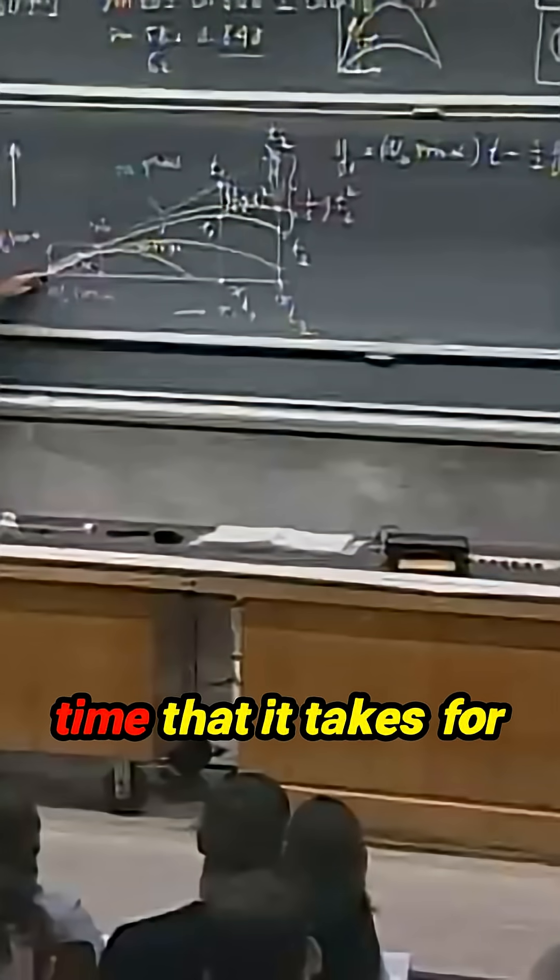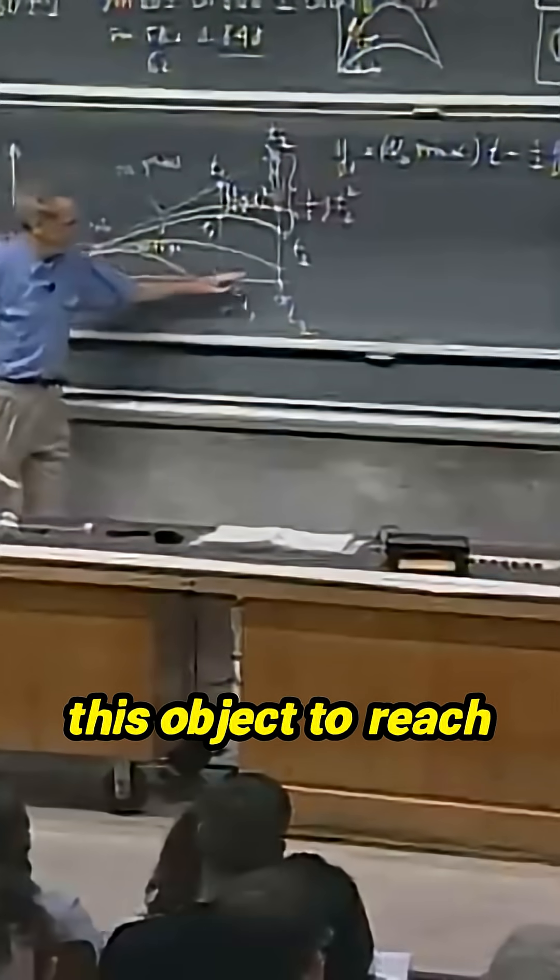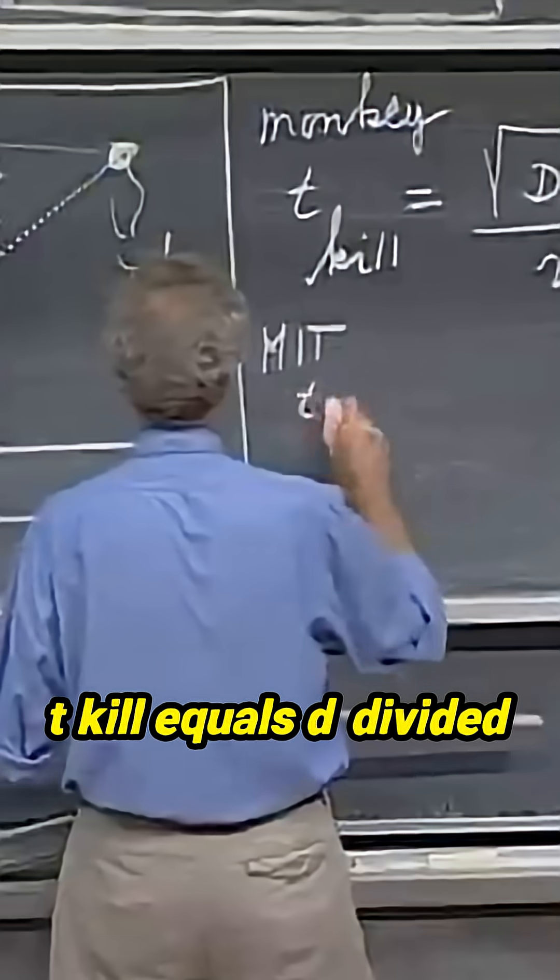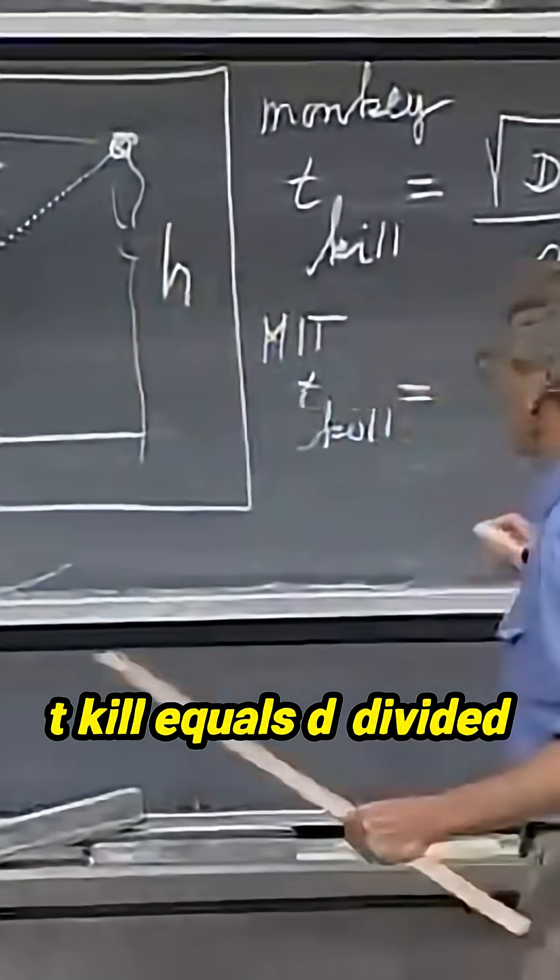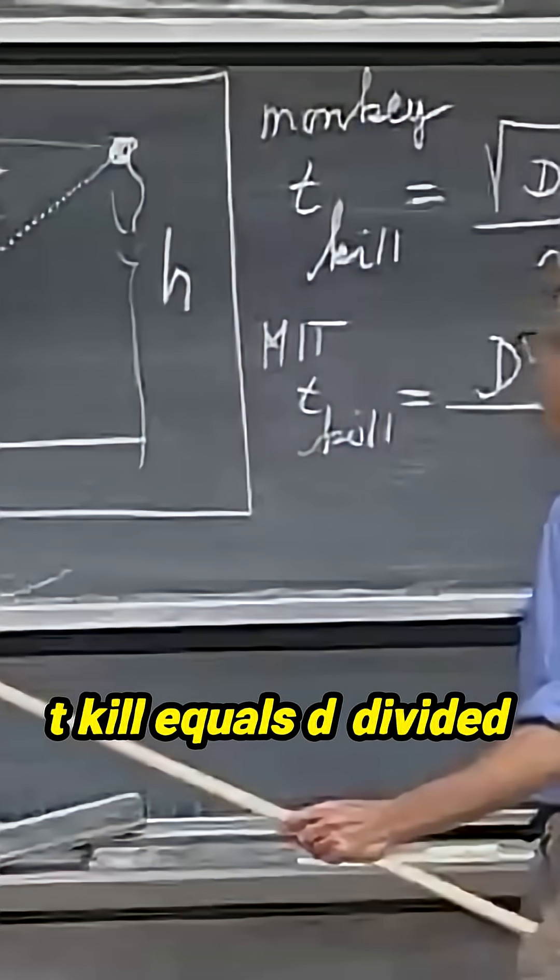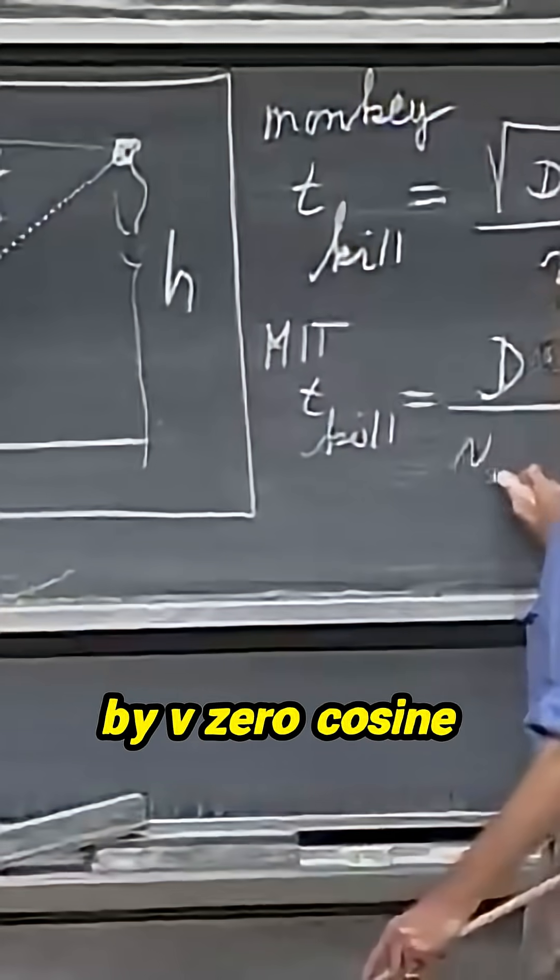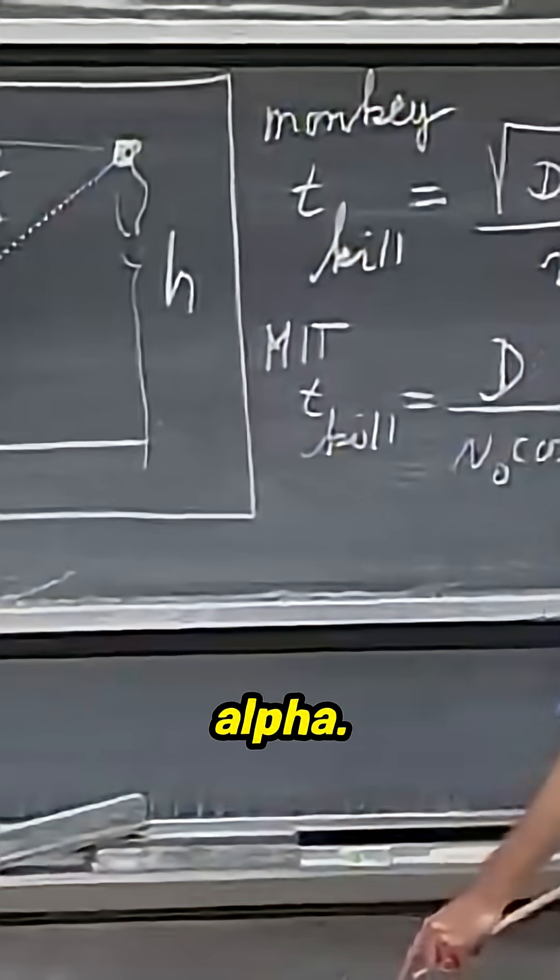In other words, the time that it takes for this object to reach this value of x, so for 26,100 MIT students t kill equals d divided by v zero cosine alpha.